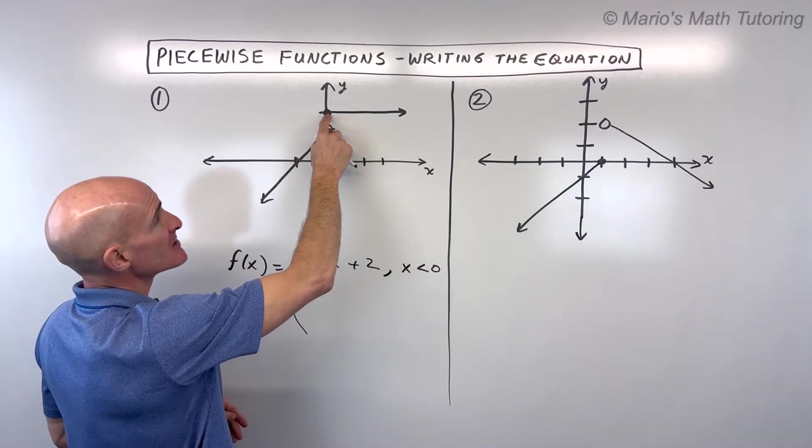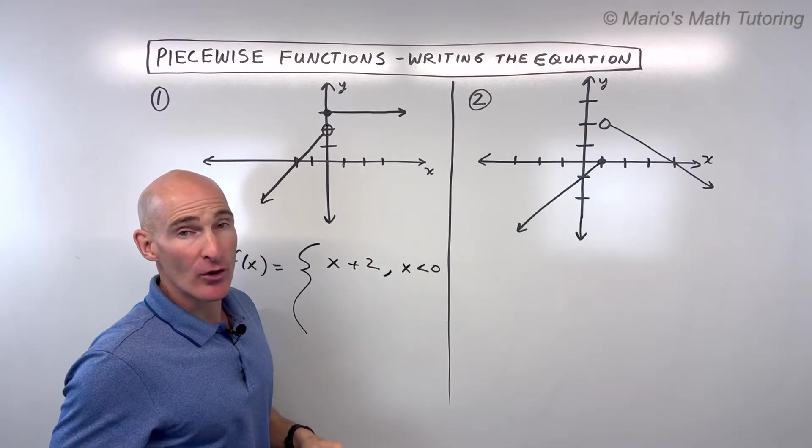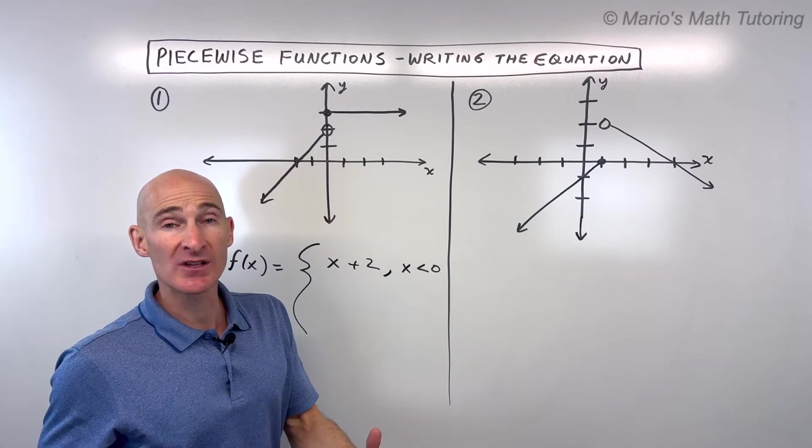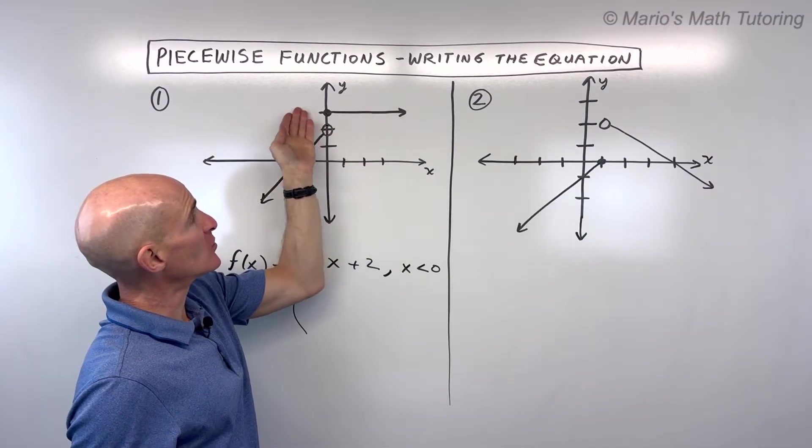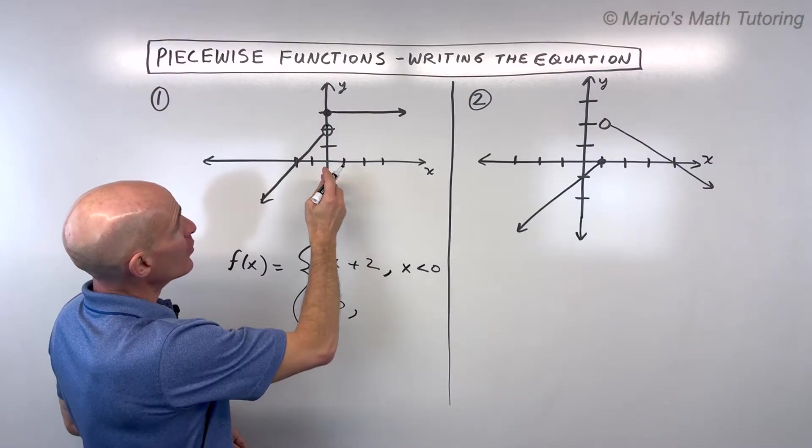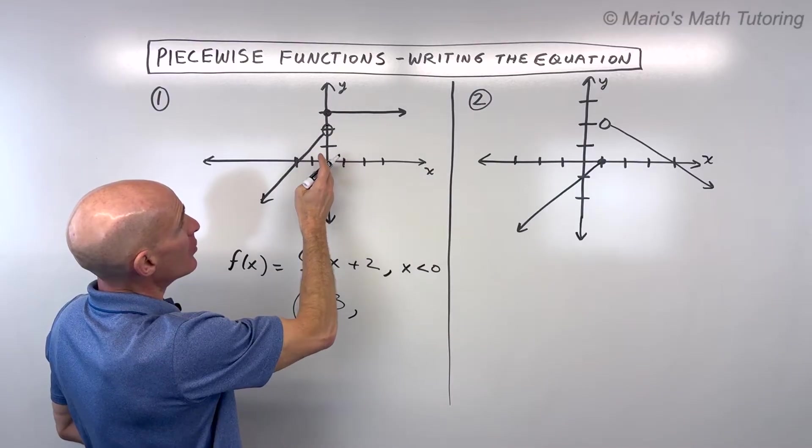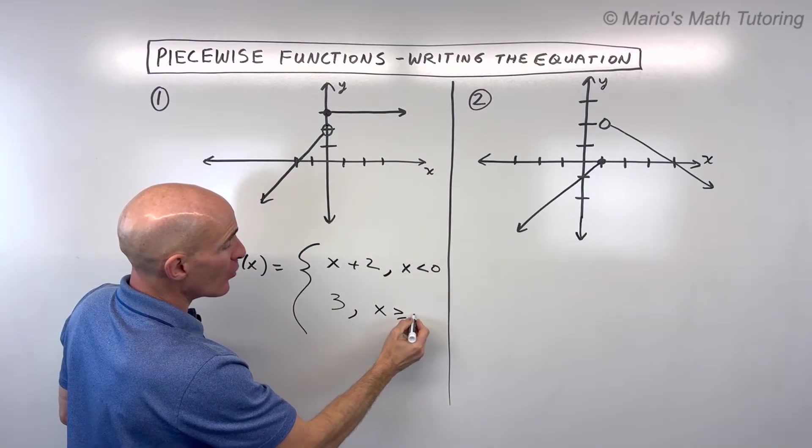Now if we jump up to this line here, this is actually a horizontal line. We know that horizontal lines are y equals lines - they have a zero slope. So you could say y equals 1, 2, 3. Y is always equal to 3. But that's when x is zero or to the right of zero. So we say x is greater than or equal to zero.